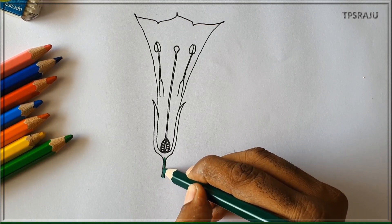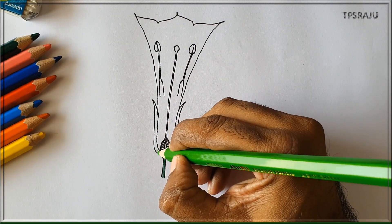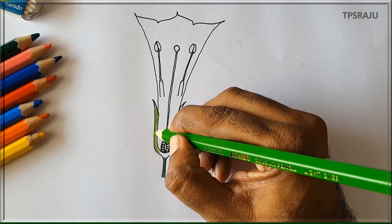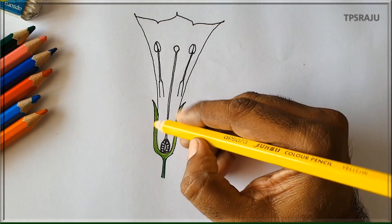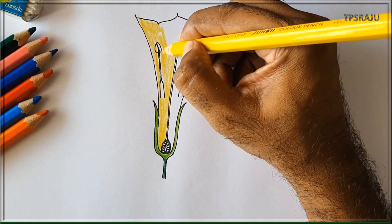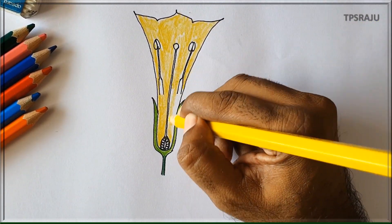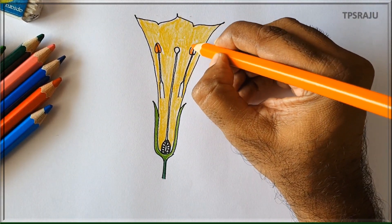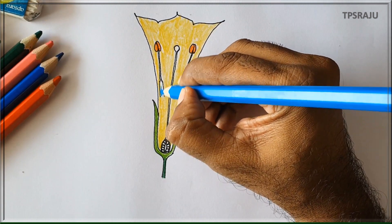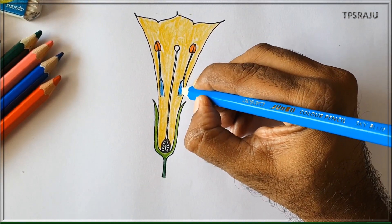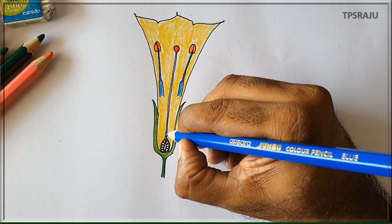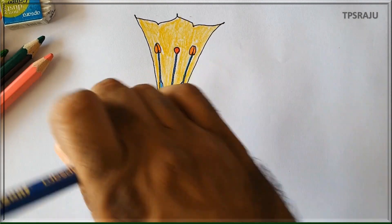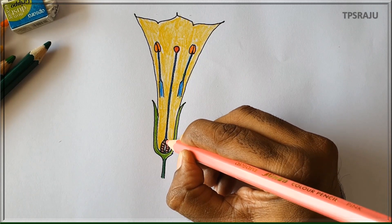Applying dark green color to pedicel, light green color to thalamus and calyx, yellow color to corolla, orange color to anther, blue color to filament, red color to stigma, blue color to style, and pink color to ovary. If we copy the colors once again perfectly it will appear very beautiful.